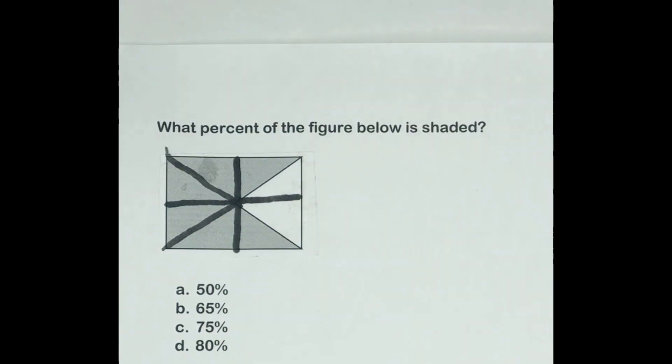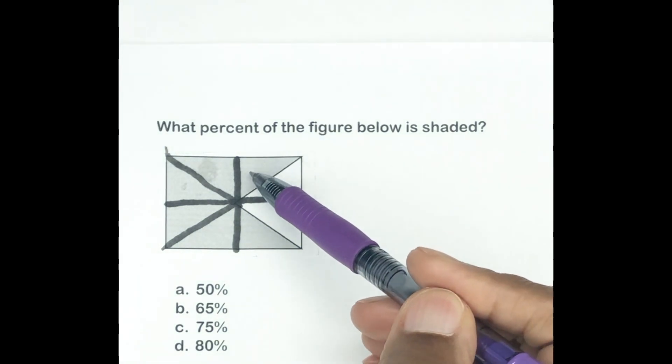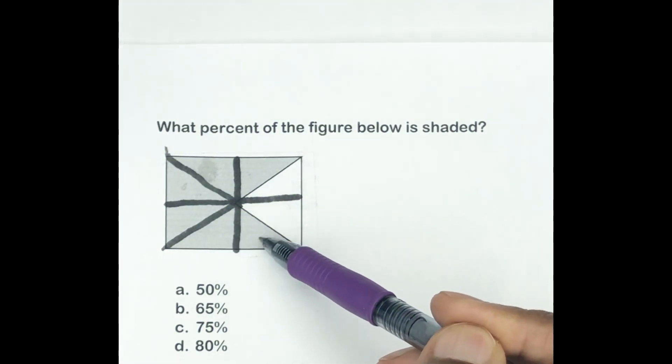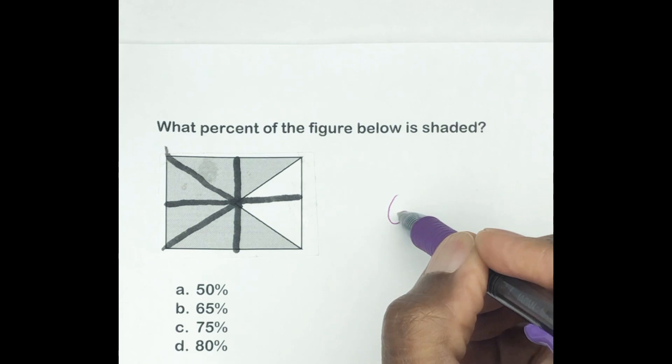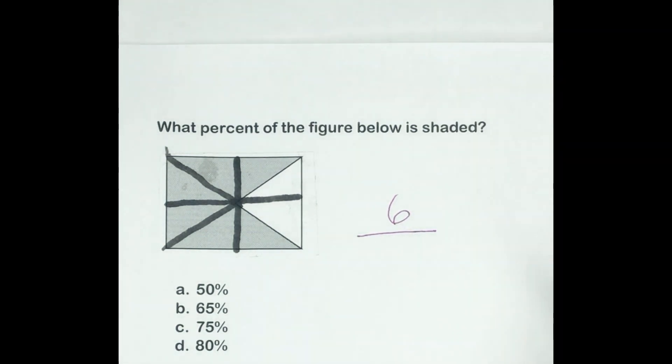So how much of it is shaded? So there's one, two, three, four, five, six shaded parts. Right, out of the total. Remember, the bottom of the fraction, the denominator, is always the total.